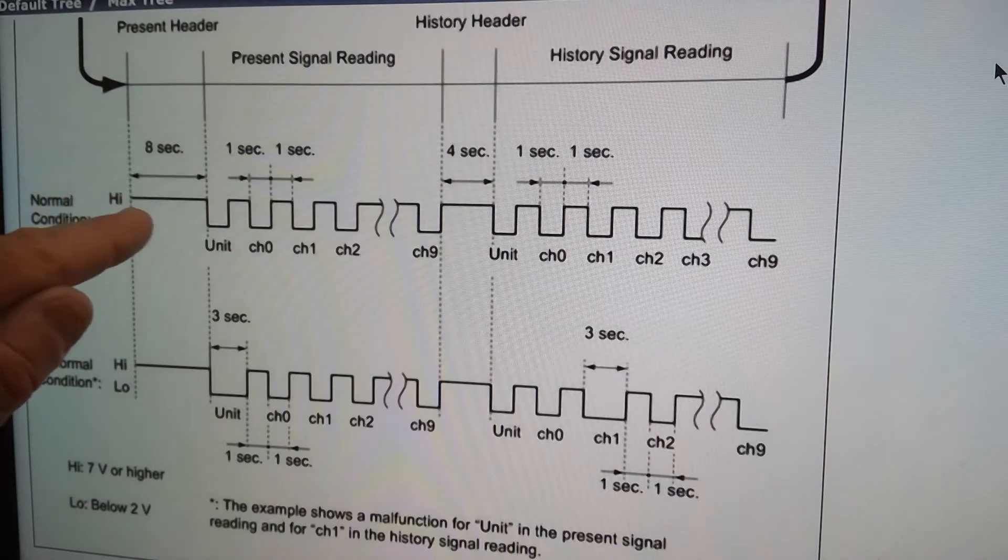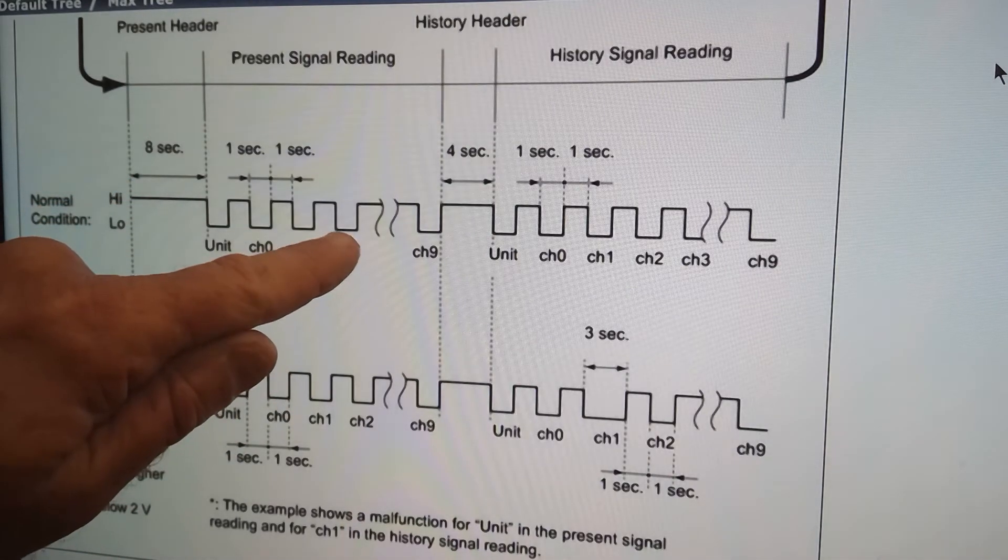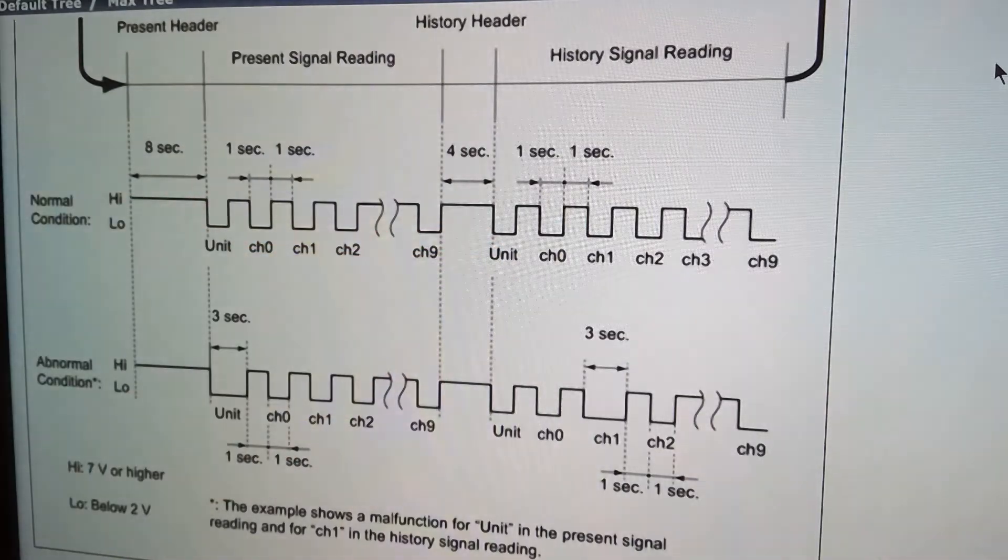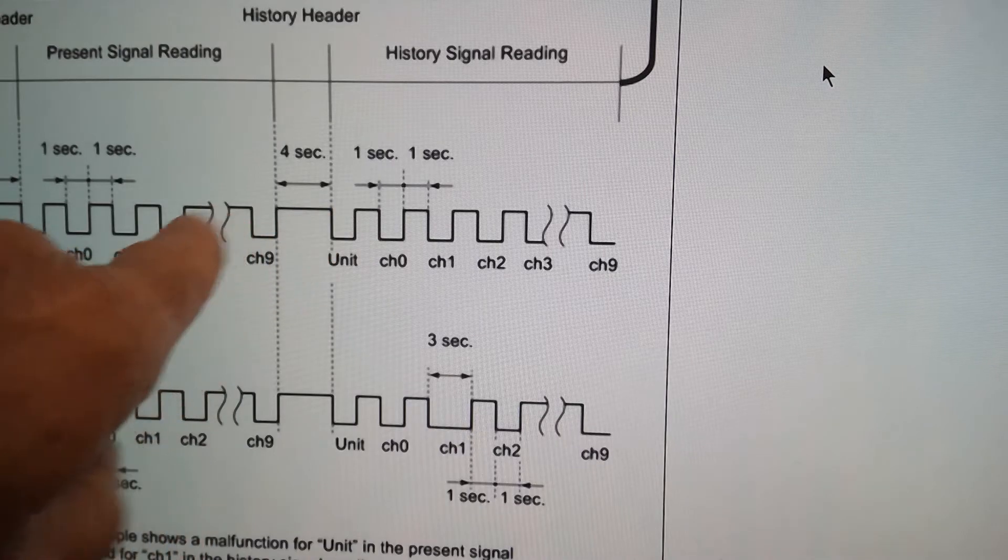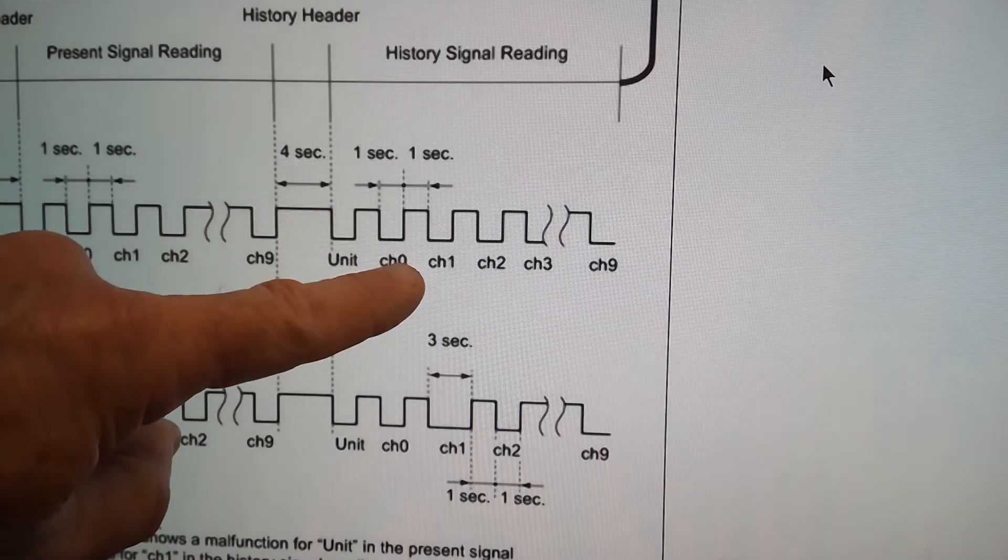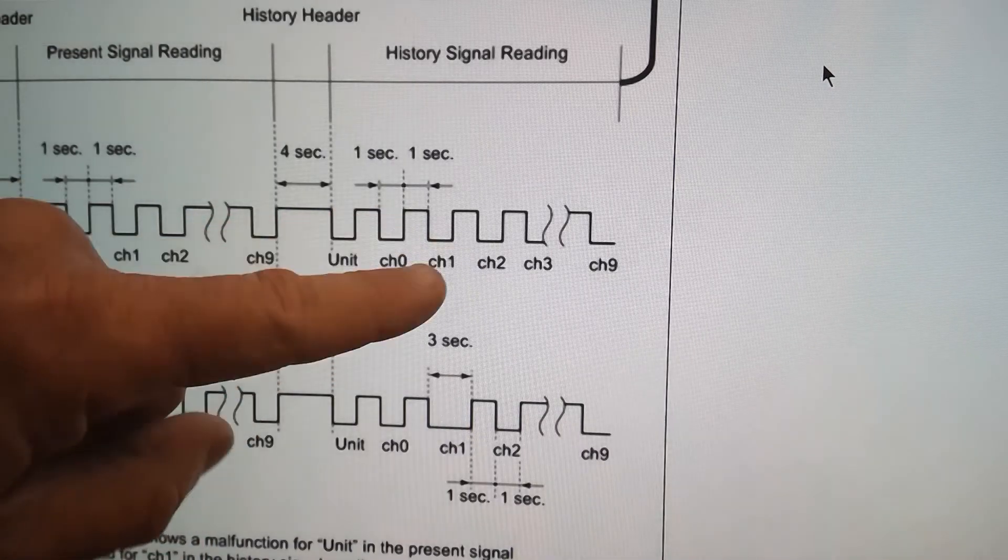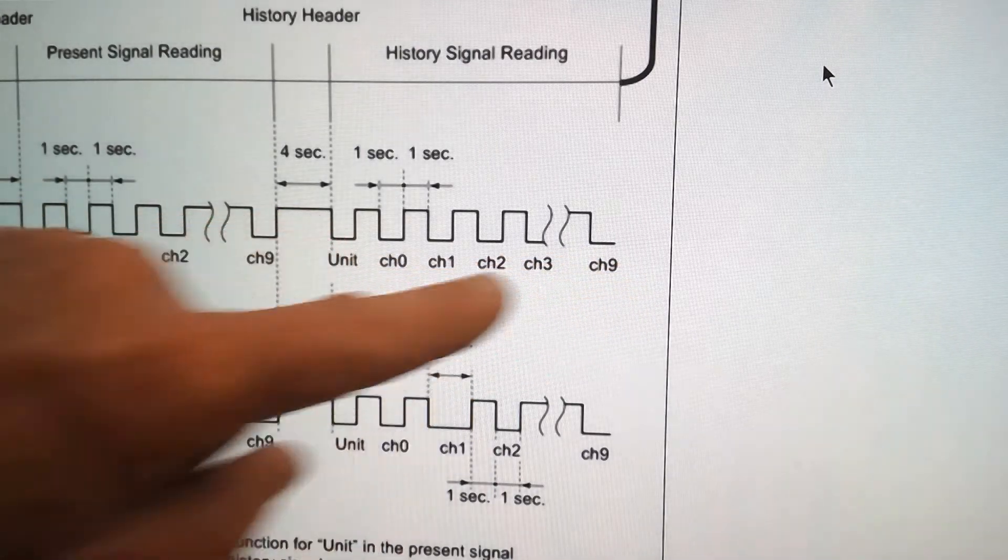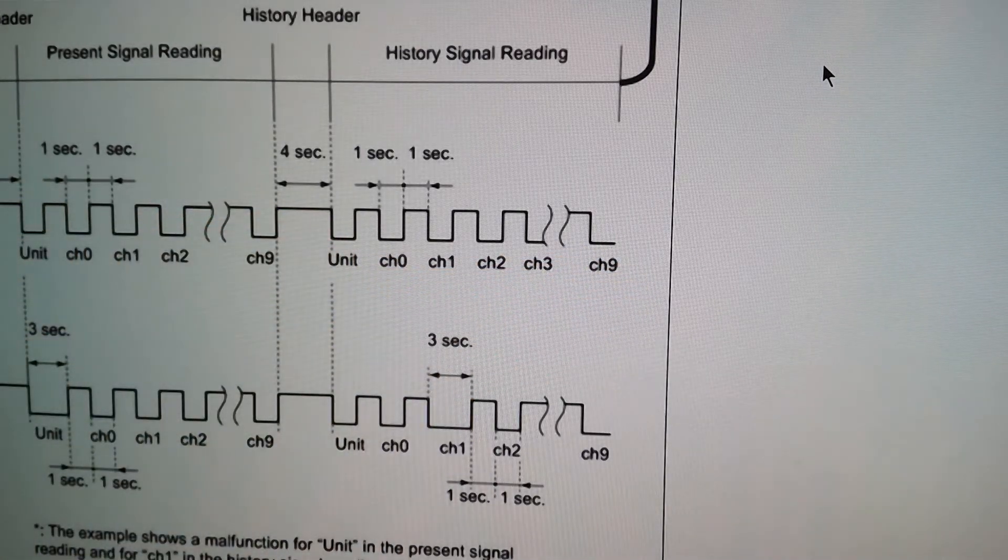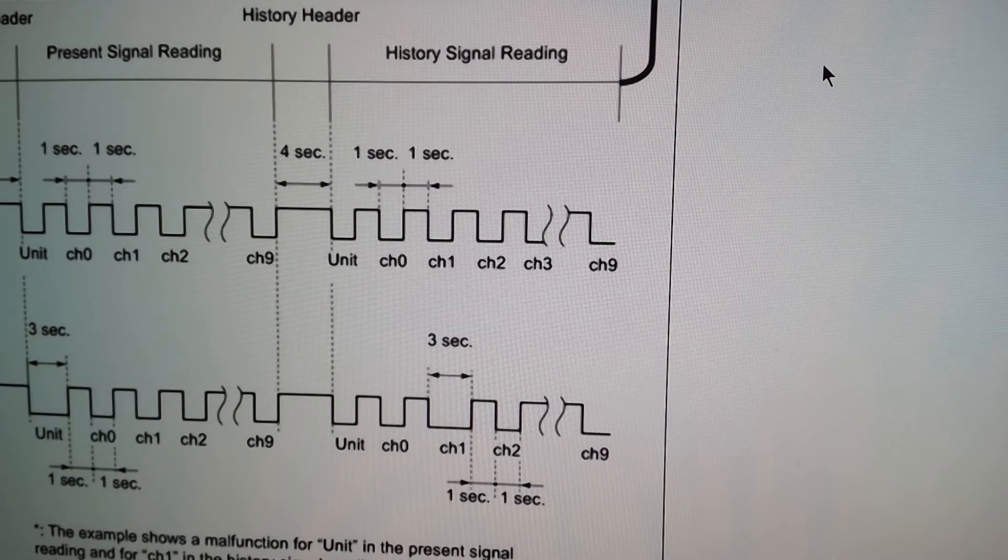If they're all normal, they'll all go to zero for one volt there. If it's an intermittent problem between the current codes and the history faults, with a four-second delay, it'll actually show you if the problem is not there now but it was there.